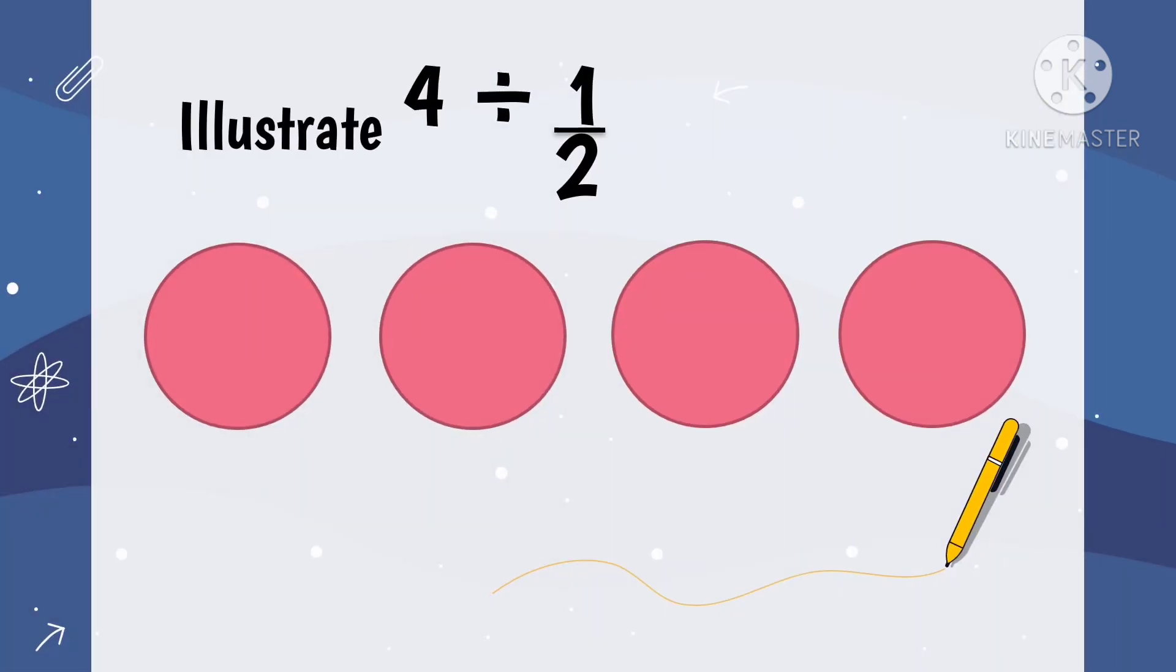Since we have now 4 circles and the fraction is 1 half or the divisor is 1 half, we will divide each circle into 2.